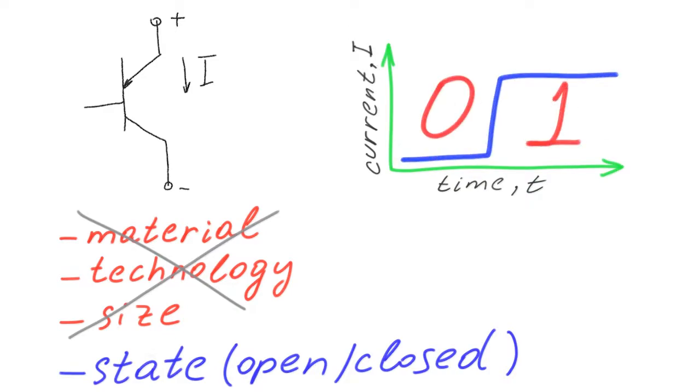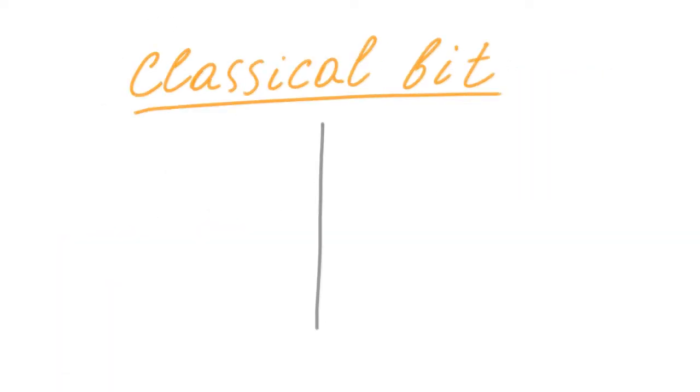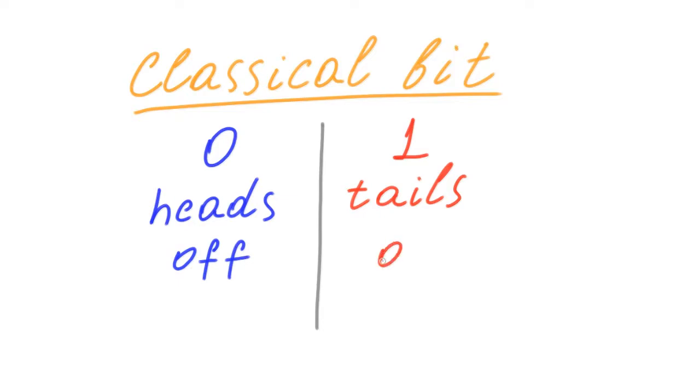All of these systems can be described by a single bit, the minimum possible amount of information. With 0 and 1 we can encode heads and tails, the on and off states of the switch, the open and closed states of a transistor, one of the two possible values of currents or voltages.